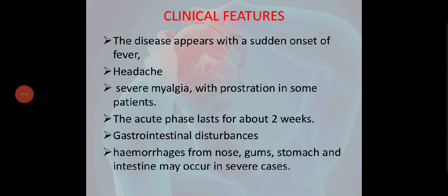Clinical features include sudden onset of fever, headache, and severe myalgia (muscle pain) with prostration in some patients. The acute phase lasts about 2 weeks. Gastrointestinal disturbances such as vomiting and diarrhea will be present. Hemorrhages from the nose, gums, stomach, and intestine may occur in severe cases — there will be bleeding from these sites.